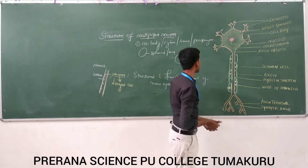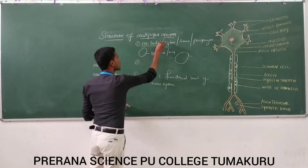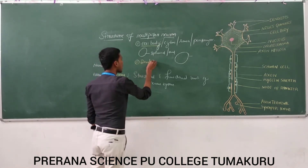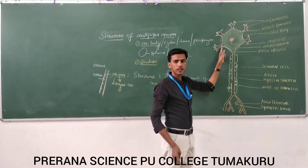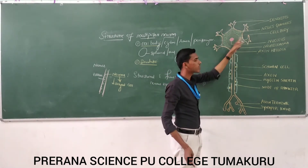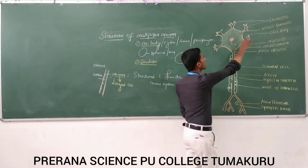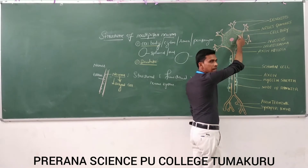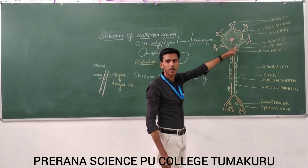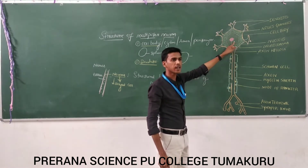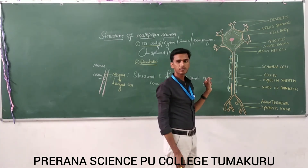So next, the second portion is dendrites. So if you observe the dendrites under the compound microscope — the cell body has a number of branching processes. Those branching processes are called dendrites. The main function of the dendrites is to receive the impulses and transmit them to the cell body.